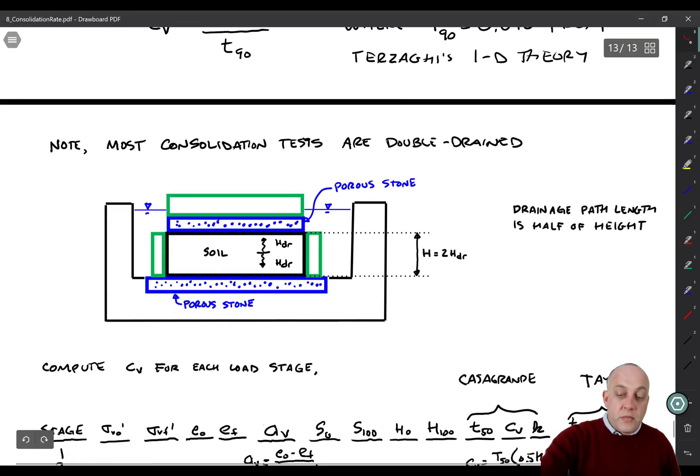One thing to note, most soil specimens in consolidation tests are double-drained. So the water can flow up from the middle and it can flow down from the middle and get into these porous stones that are connected to the reservoir as drainage boundaries. In that case, the drainage path length is equal to half of the layer thickness. A common mistake is that students use the layer thickness in their calculations instead of using the drainage path length. So always keep that in mind.